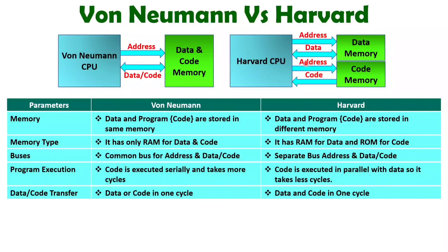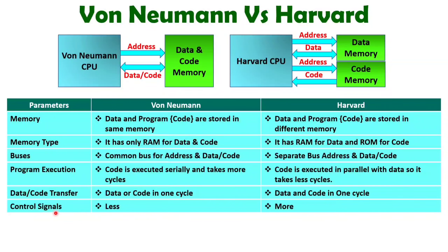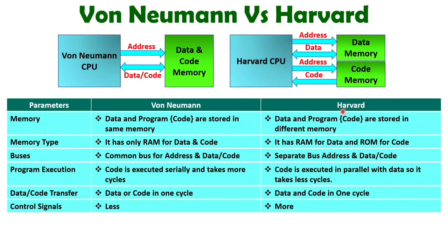The disadvantage of Harvard CPU is that you need many more control signals compared to Von Neumann structure. With Von Neumann, only one memory is there, so fewer control signals are required. With two separate memories, you need extra control signals. With data memory, memory read and memory write control signals need to be provided. With code memory, only a memory read control signal is needed. With Von Neumann structure, you just need read and write control signals for the single memory. With separate memories, memory selection is also essential, which comes under control signals. So Von Neumann has fewer control signals compared to Harvard architecture.